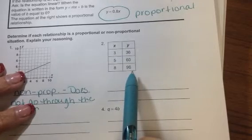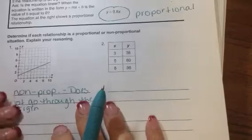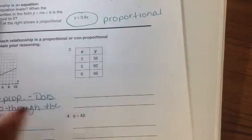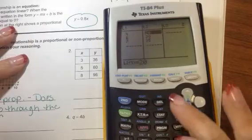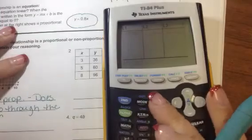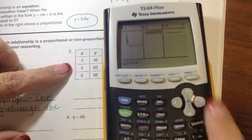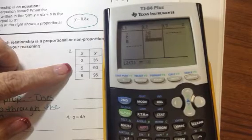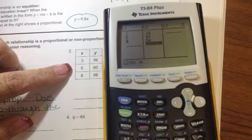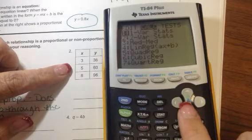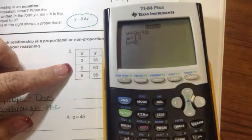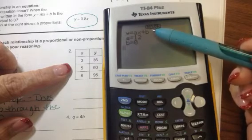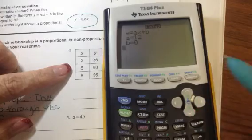Okay. If I put this equation into my calculator, let's just go ahead and do it since we have time. Okay. We're going to clear that out. We are going to hit stat, edit. We're going to delete these numbers. Okay? We're going to put in 3, 5, and 8. We're going to go over here, and we're going to put in 36, 60, and 96. Did I hit enter? No, I didn't. Okay. Then we're going to hit stat. We're going to move over to calc, down to 4. We're going to hit enter. We're going to move down to calculate. Okay. If I write this as an equation, my slope is 12, and I do not have a y-intercept. So, since I have a 0 for my b, that means that this table is proportional.